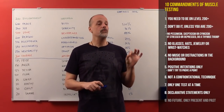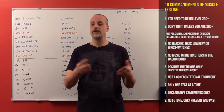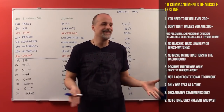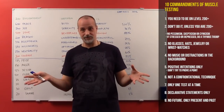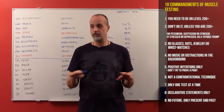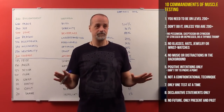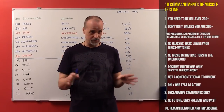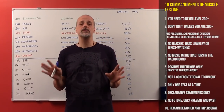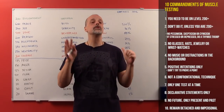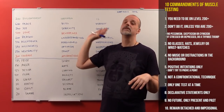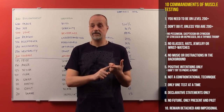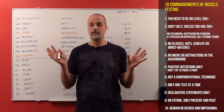Rule number nine: no future. Do not test the future, because you are creating your own future — it depends on your choices, actions, vibrations, and attitudes. You can test present and past, but not the future. Rule number ten: remain detached and impersonal. You don't care what the result is going to be. The most important three rules are: first, do not do it unless you are above level 200 at the moment of testing; second, positive intentions only — no confrontation; and third, remain detached and impersonal at all times.